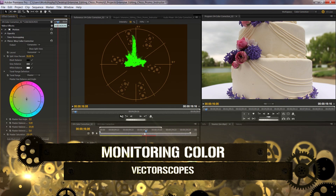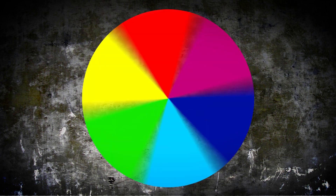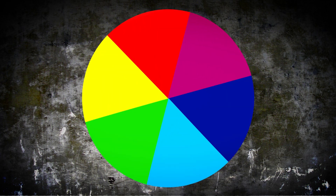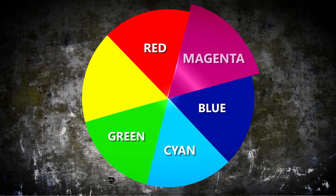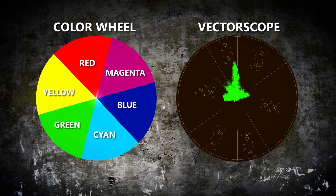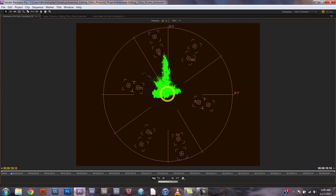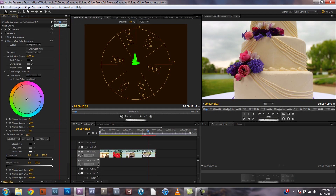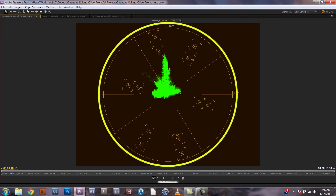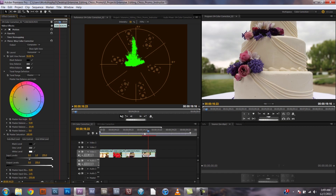The last helpful monitor is the vectorscope, which shows the color or chroma values of your image. Of all the monitors, this one can be the most confusing for first-time editors. It's helpful to look at a color wheel: just as a color wheel shows the primary colors of red, green, and blue, as well as the secondary colors of cyan, magenta, and yellow, the vectorscope shows these colors as well. The center of a vectorscope represents completely unsaturated or black-and-white footage, while the outermost ring represents 100% color saturation.